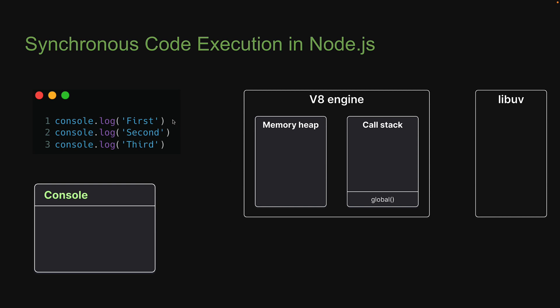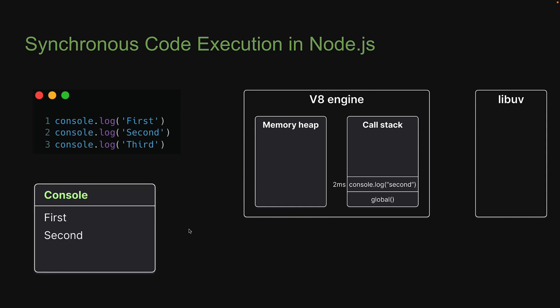Then on line one, we have a console.log statement. The function is pushed onto the stack — let's assume this happens at one millisecond. 'First' is logged to the console, then the function is popped off the stack. Execution comes to line two at two milliseconds. The log function is again pushed onto the stack. 'Second' is logged to the console and the function is popped off the stack.